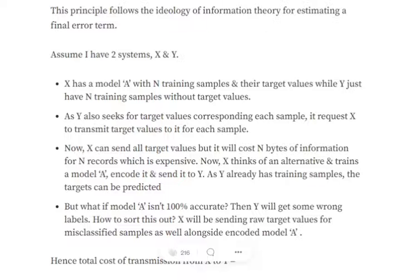So what we're trying to do is that system X wishes to send system Y the target values for the training data set. Sending them in raw format would cost n bytes. So what it's trying to do is train a model XYZ and eventually send the model to Y so that it can predict labels for the training data set. But now as it is saying that XYZ can have inaccuracies as well, Y might get some wrong labels.